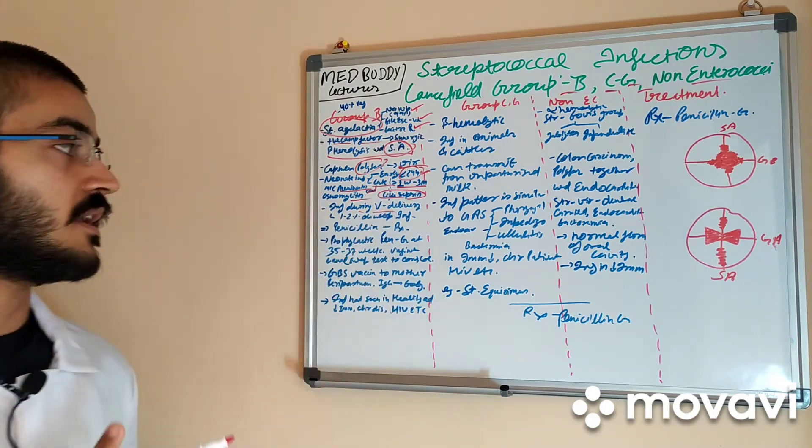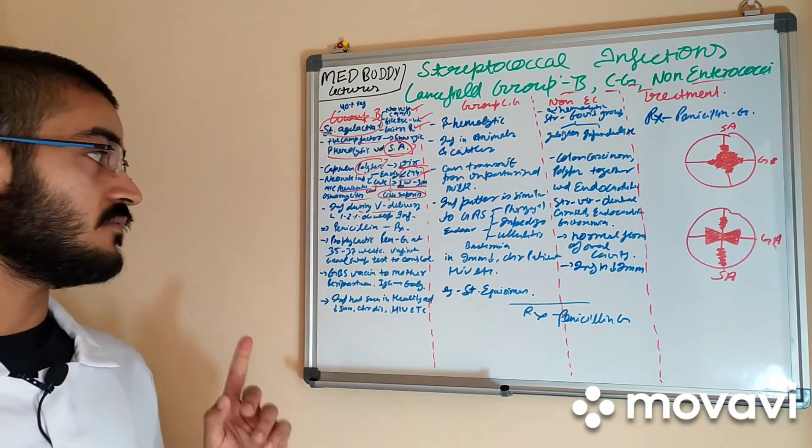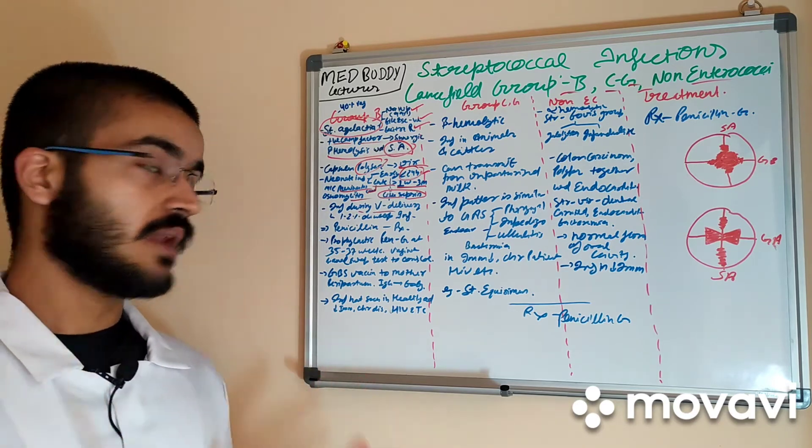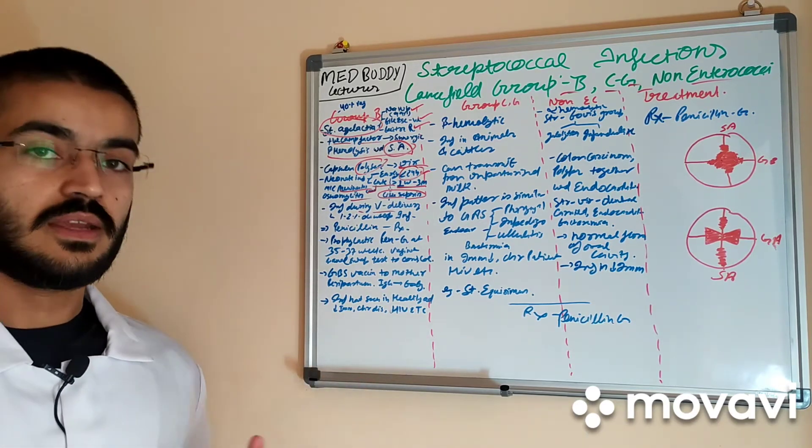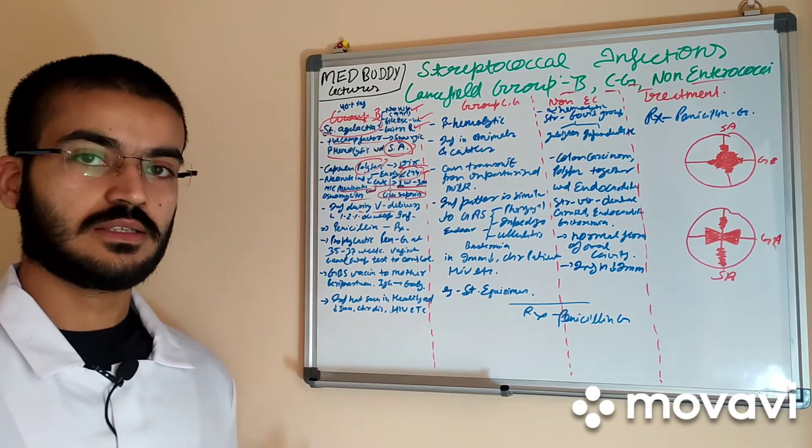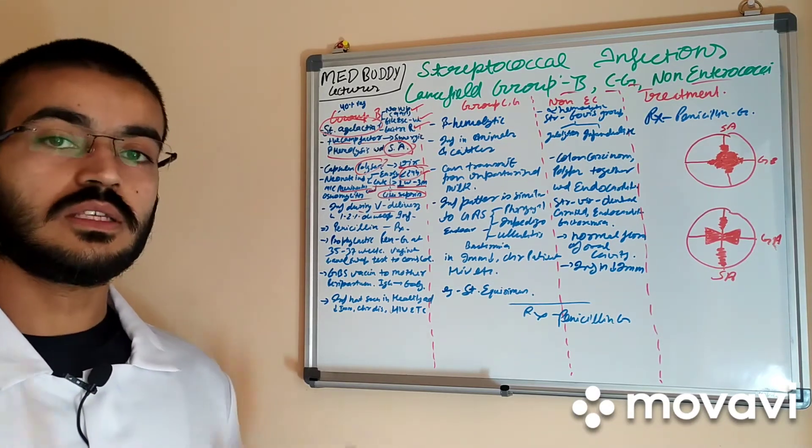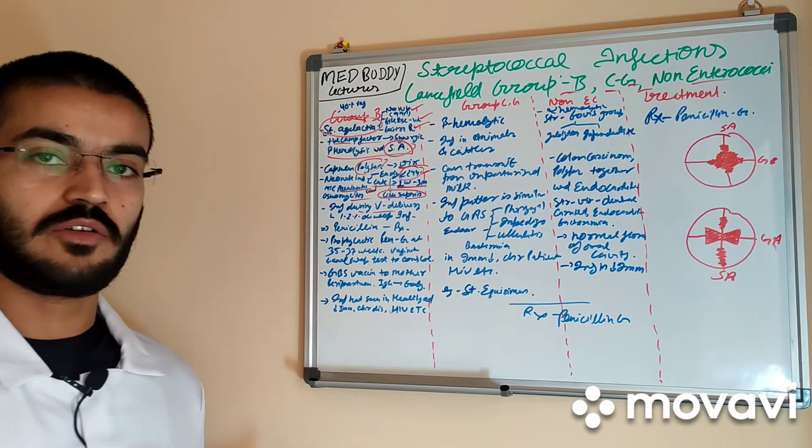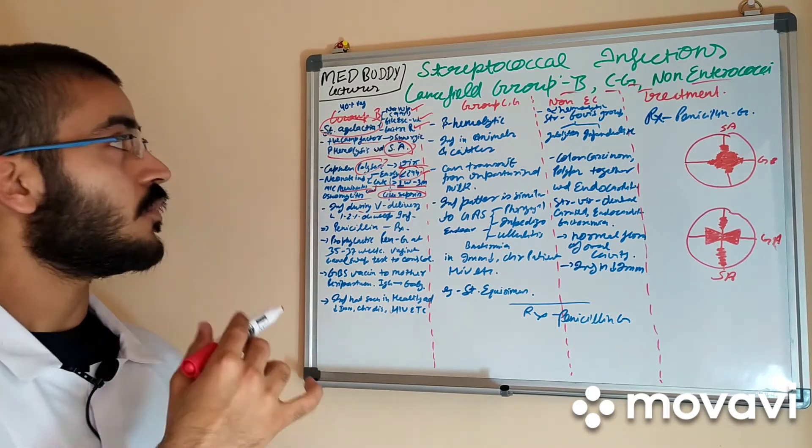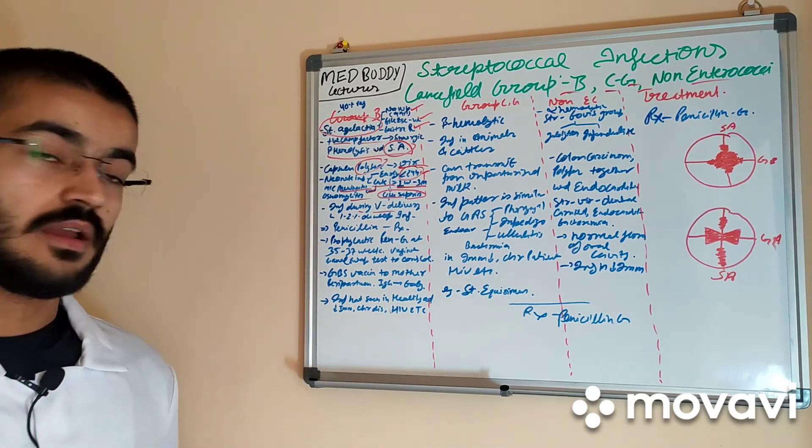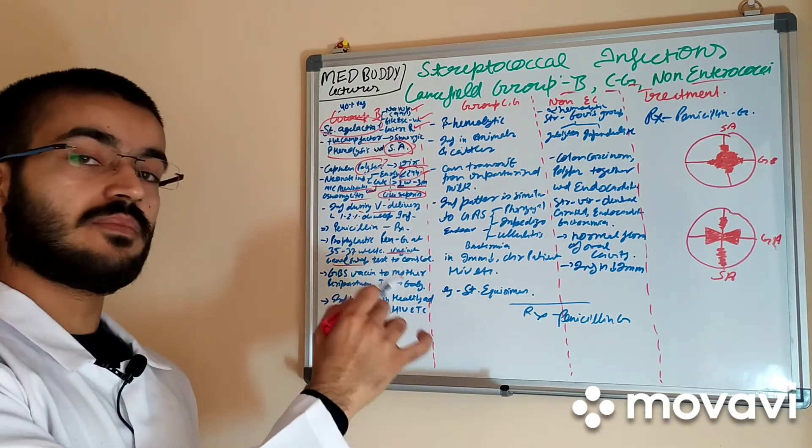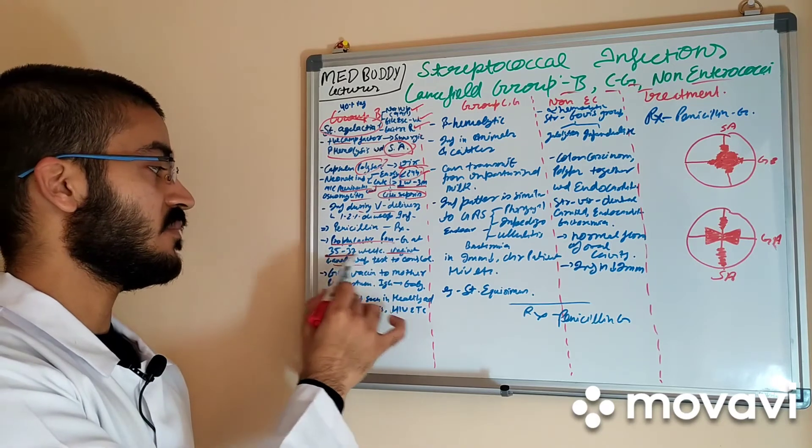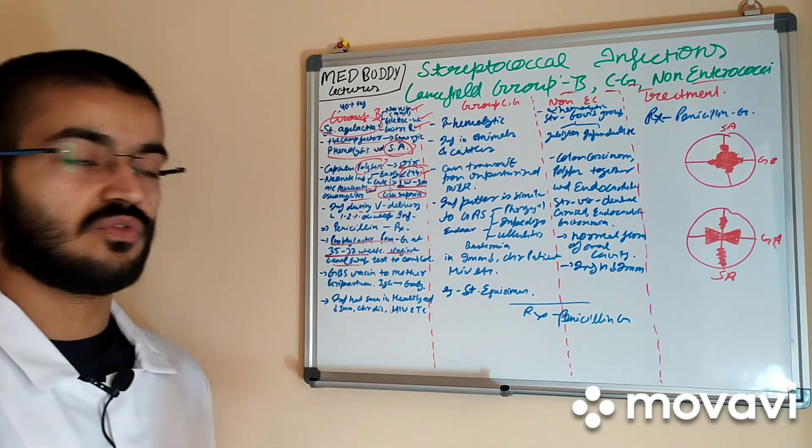Infections during vaginal delivery in 1-2% of infants can be seen because of this bacteria. The treatment is penicillin and prophylaxis to the mother is to be given if she is carrying flora of this bacteria. And that is confirmed by vaginal and anal swab testing. And that penicillin prophylaxis is to be given between 35 to 37th week.